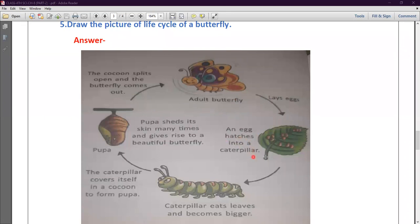And an egg hatches into a caterpillar, then caterpillar eats leaves and becomes bigger. The caterpillar converts itself in a cocoon to form pupa. It's a pupa form, and pupa sheds its skin many times and gives rise to a beautiful butterfly.